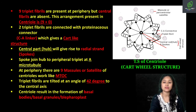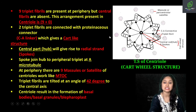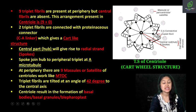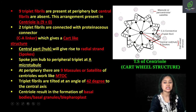Also, ye jo nine triplet fibrils hain, ye aapas mein connected hain with the help of a connector — a proteinaceous linker that is said to be CA linker or CA connective. Ise CA connective isliye kaha gaya, as you can see that C of one triplet fibril is connected with A of the next. Jiski wajah se iski arrangement ek zigzag cartwheel-like ho jati hai, and it appears as a cartwheel structure.